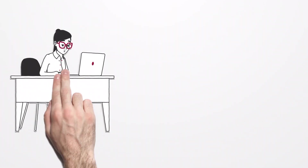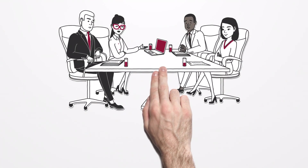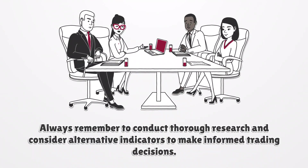After testing the stochastic oscillator on the Dow Jones 30 stocks over 12 years, we found that it is a weak indicator on candlestick and OHLC charts. Only 28% of stocks outperformed a simple buy-and-hold strategy using the stochastic oscillator, while 72% of long-term investors achieved better results. While traders love the stochastic oscillator, our extensive testing and analysis suggest that it should be approached with caution.